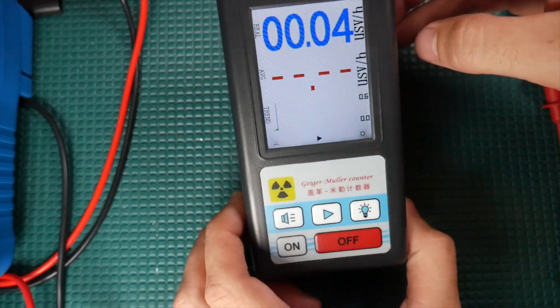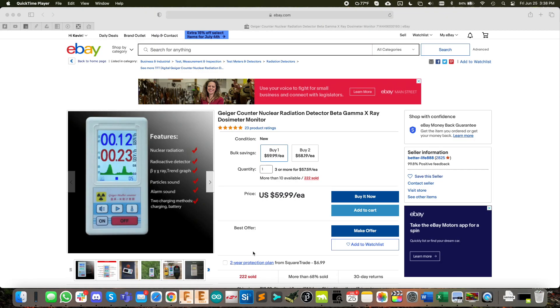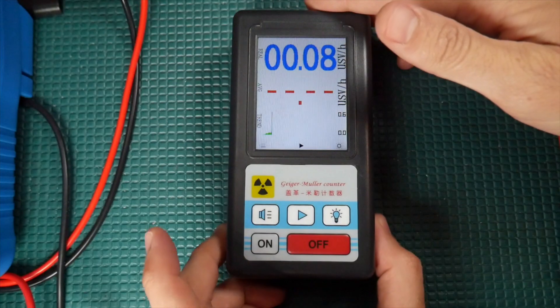So I just picked up this cheap Geiger counter here. It's called the BR-6. You could get them off eBay here for like 60 bucks. And I think I even got this one cheaper from AliExpress.